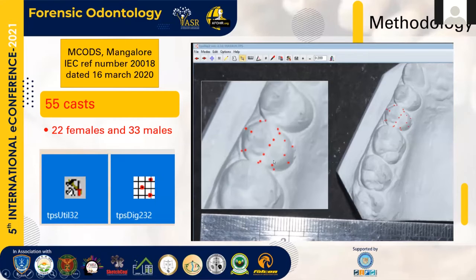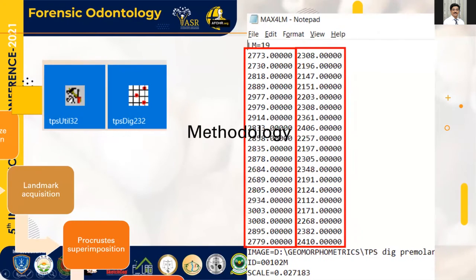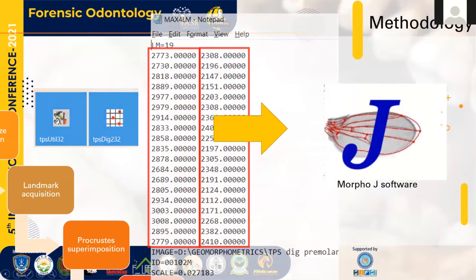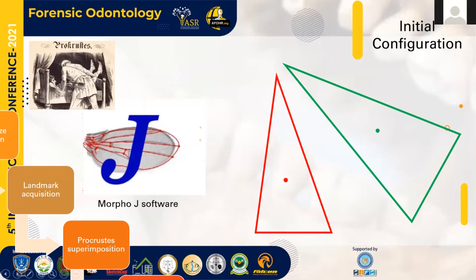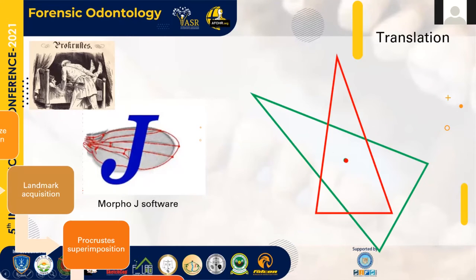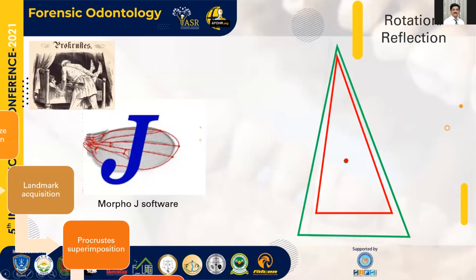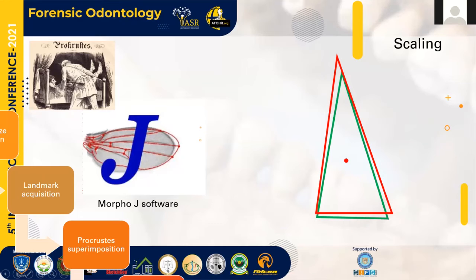These landmarks were analyzed using software called TPS Util and TPS Dig, where you can see the dots that have been placed. These landmarks were marked in 55 casts, which included 22 female and 33 male casts. The landmark points were then transferred to a software called MorphoJ, which is used to analyze these points using a principle called Procrustes superimposition. Procrustes is a Greek mythology character — essentially a serial killer who tried to fit his victims into his bed by chopping off extremities. With that analogy in mind, two triangles — red and green — are translated, rotated, and scaled so that the three vertices are comparable.